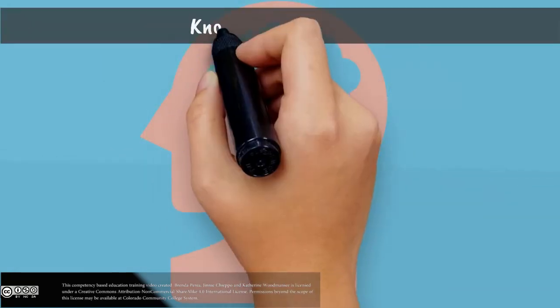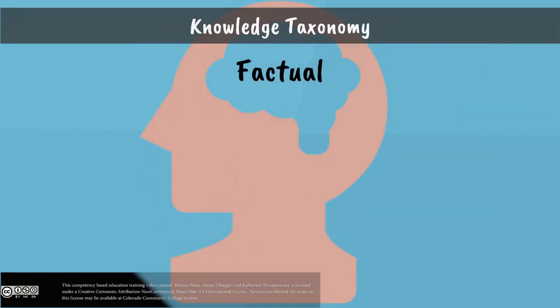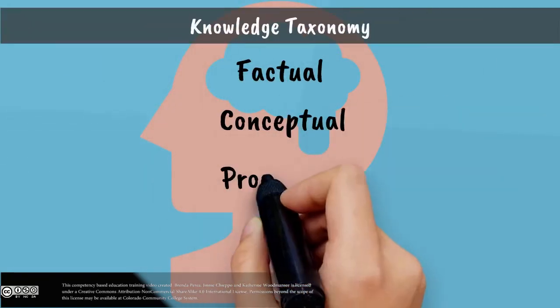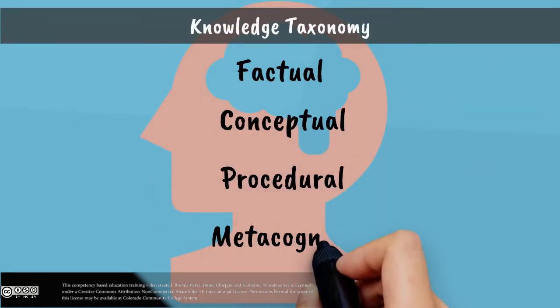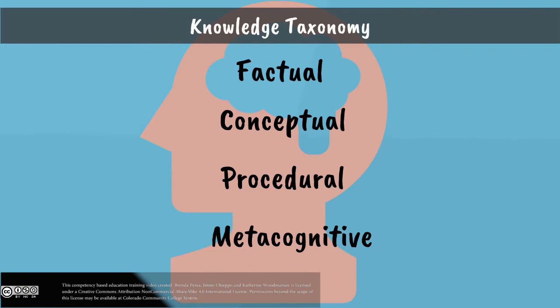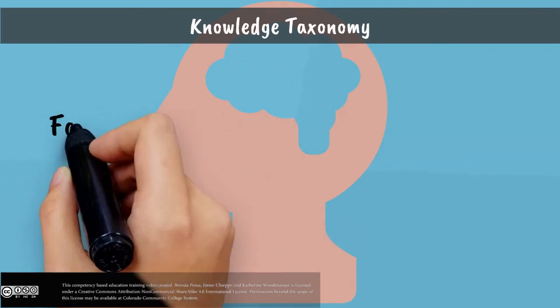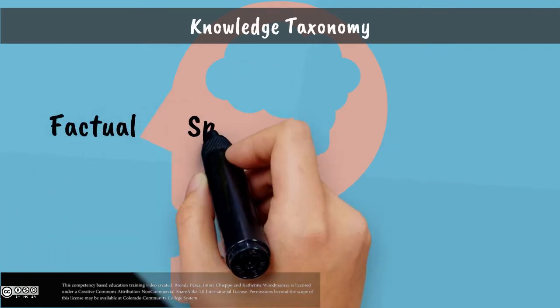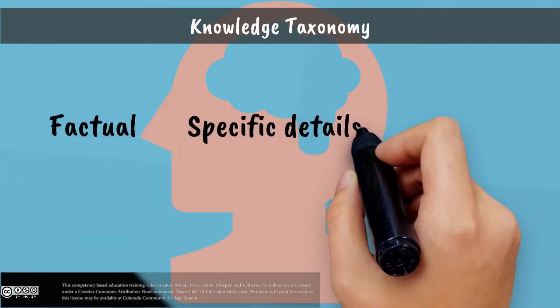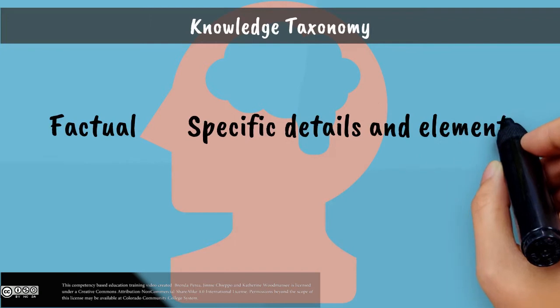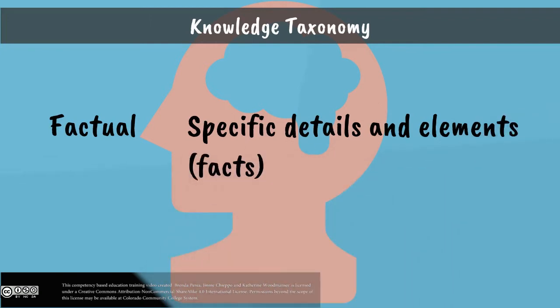Knowledge now has its own dimension in the taxonomy and is broken down into four cognitive categories. Factual knowledge has to do with the knowledge of specific details and elements — in other words, facts.